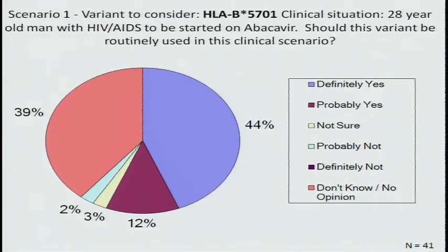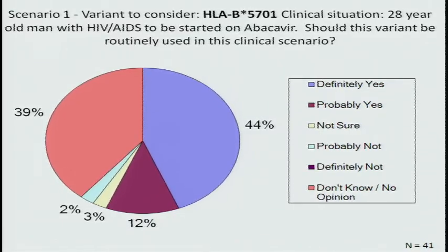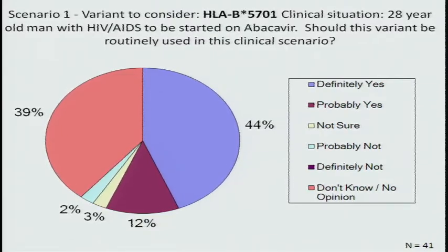I thought it would be interesting to take some of the results from the inquiry we sent out and see if we could use this conceptual framework to look at it. The variants we chose were meant to span the range — from the abacavir situation, where there's clearly an FDA black box warning that says you should test everyone you're going to prescribe abacavir for, to others where we deliberately selected things where there is almost no evidence of clinical validity, much less utility. So it was very interesting to see the results.